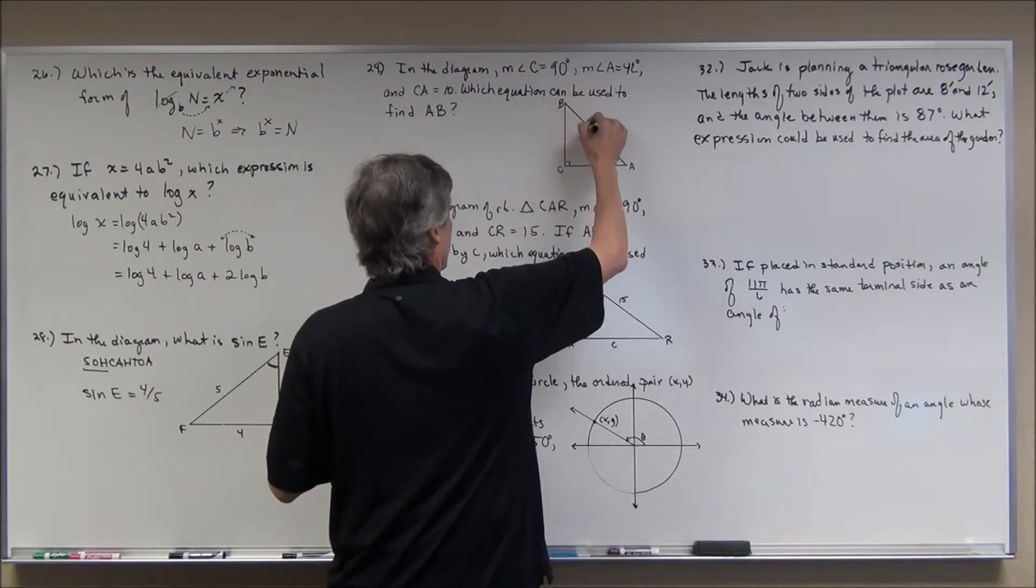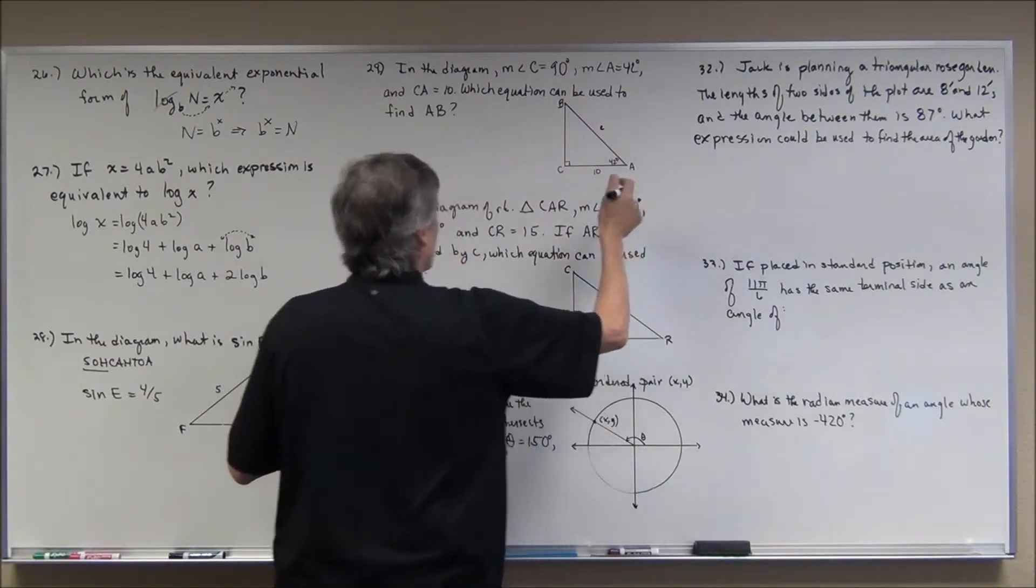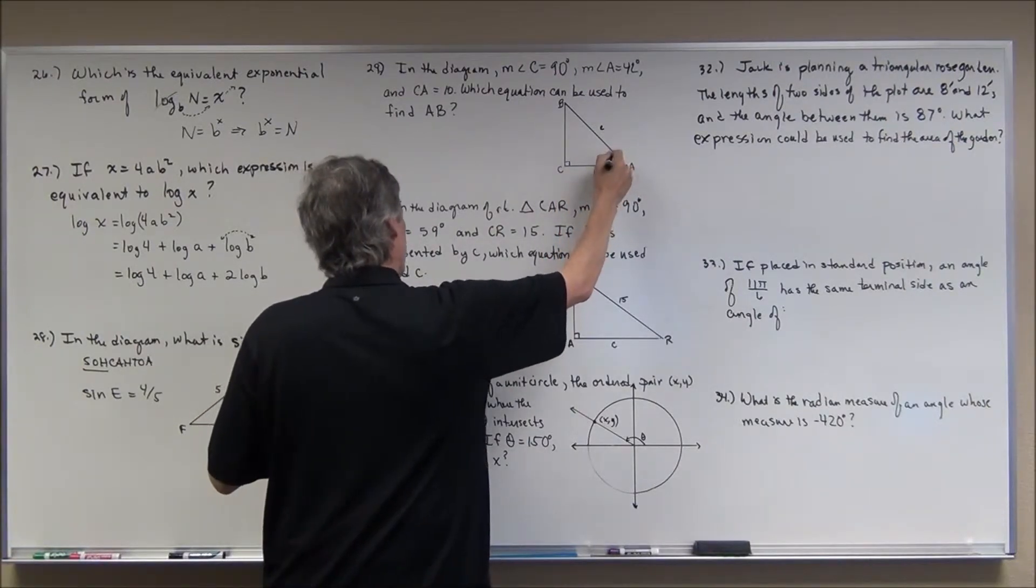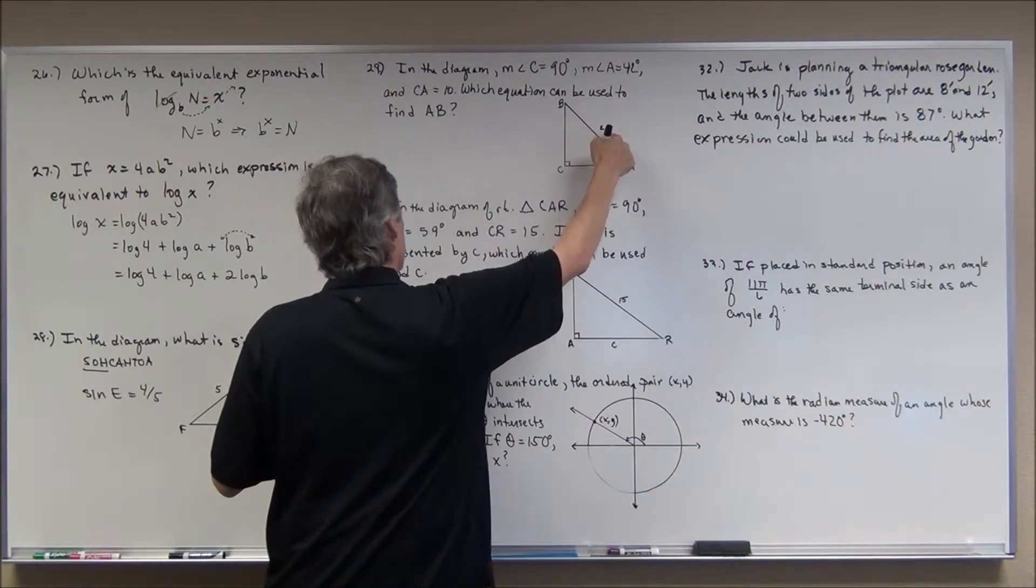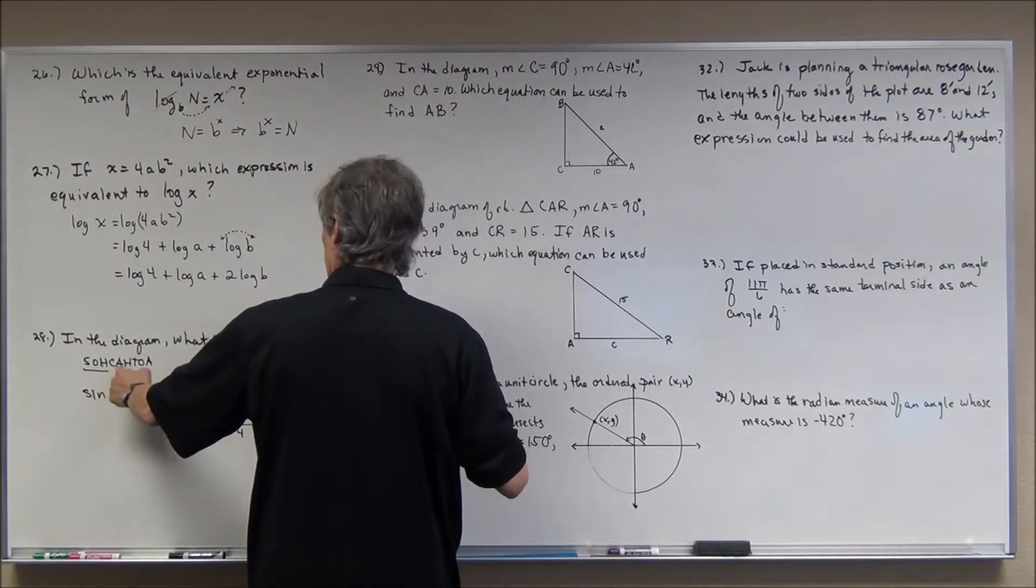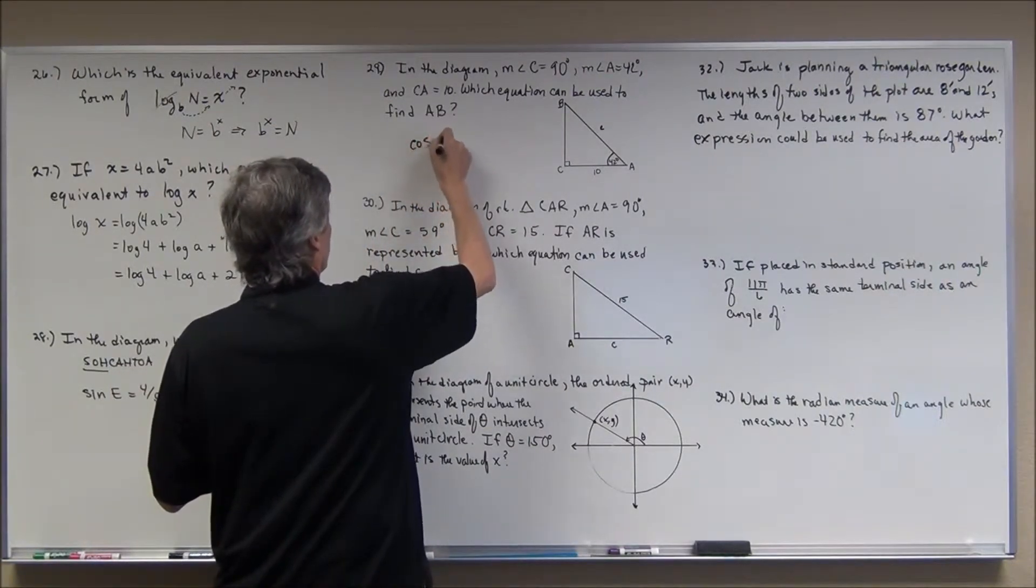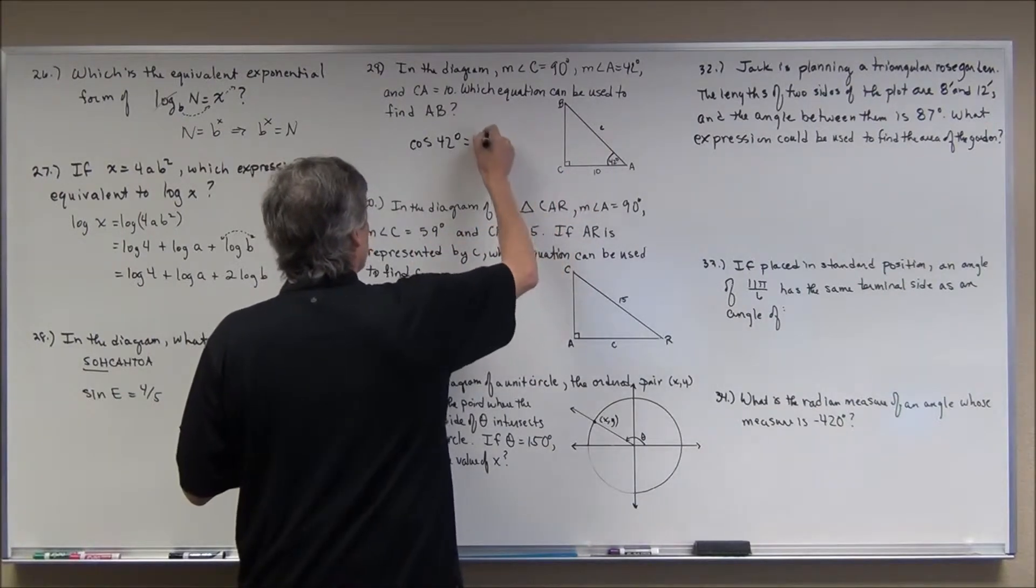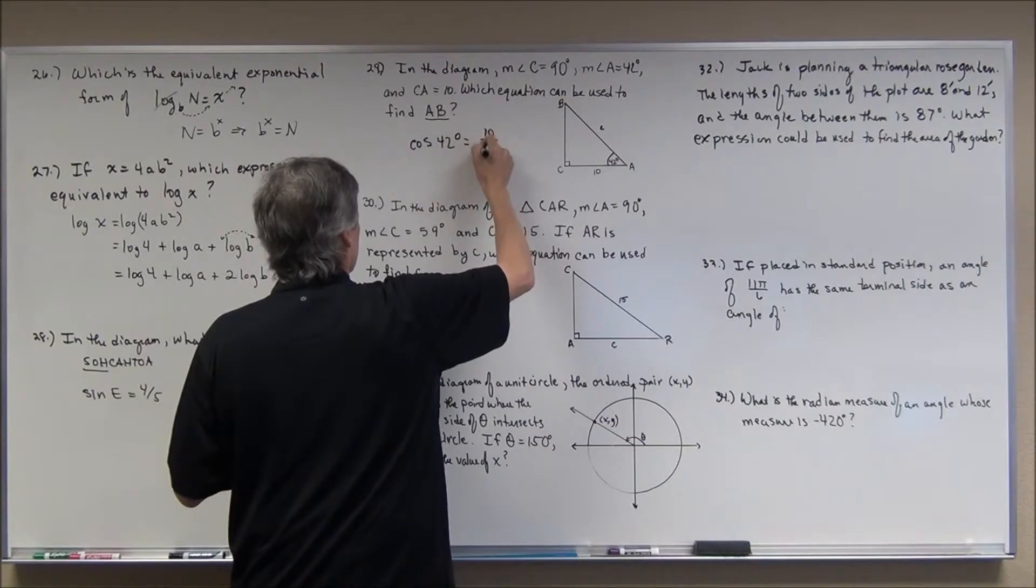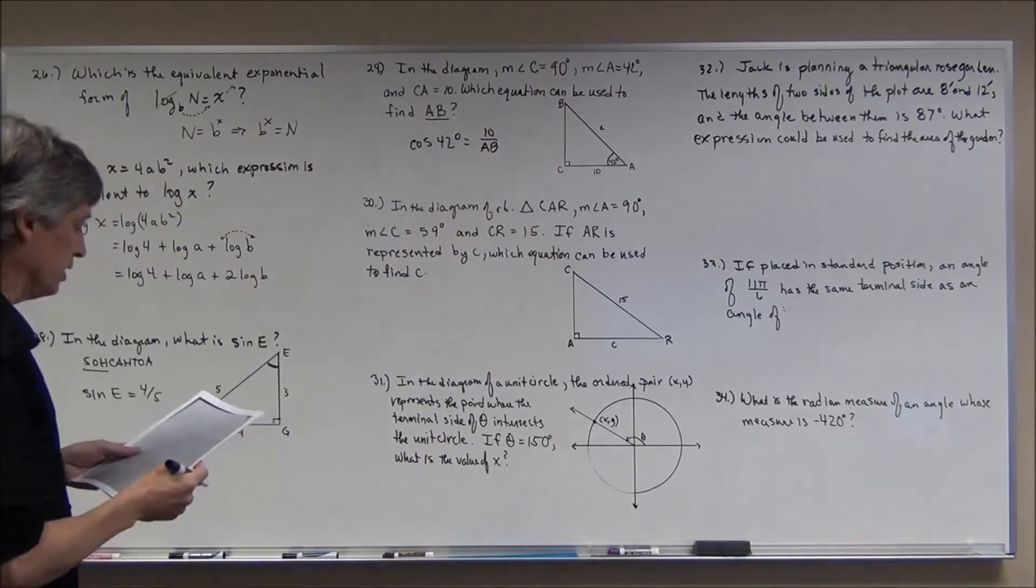I had the 42 written down. I just didn't have it because of the diagram there. So now, which equation can be used to find AB? Well, AB is this guy right here, which we would call lowercase letter c normally. So to find AB, I have the adjacent to this angle. And that's the hypotenuse. So adjacent hypotenuse, I'm going to use cosine right here. So I would say that the cosine of 42 degrees is equal to the adjacent 10 over the opposite, which I've called c, but they're calling it AB here. Line segment AB, or the measure of line segment AB. And that matches up with answer D.